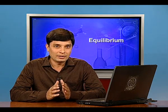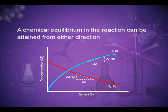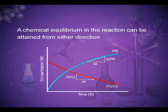A chemical equilibrium can be attained from either direction, as shown in the graph, which plots concentration against time. As time proceeds, the concentrations of reactants hydrogen and iodine decrease as hydrogen iodide is formed, so the concentration of the product increases. At a certain point, the concentrations of H₂ and I₂ become equal to the concentration of HI — that point is the equilibrium point.